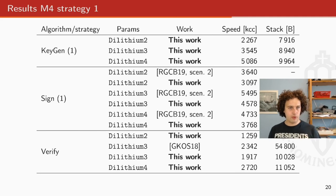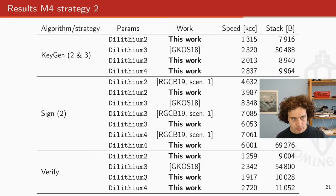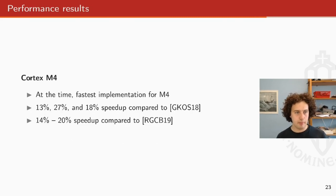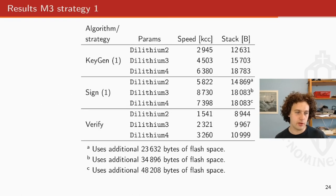So for the M4, we have these speeds and stack values and compared to the previous work. These are all the numbers. You can read them here. Basically on the Cortex M4, we have the fastest implementation for, for all the, we have. At the time that we wrote this software, we had the fastest implementation for the Cortex M4. We have like a 13 to 27% speed up compared to one of the previous works and a 14 to 20% speed up to the other.